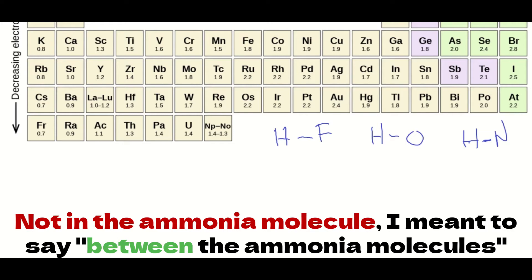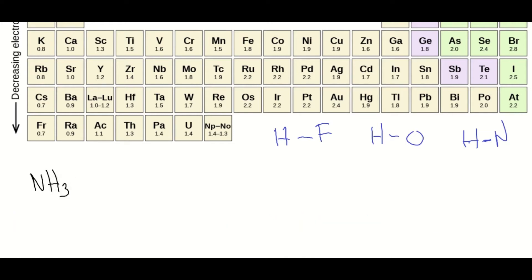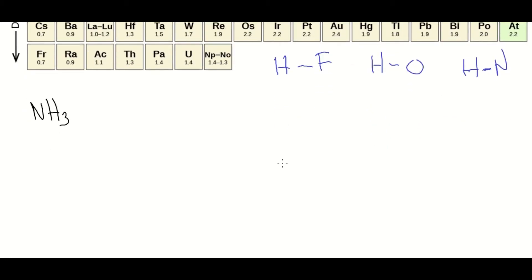All right, so let's do the ammonia-ammonia molecules first. Ammonia is NH3. So if we draw the Lewis structure, you get something like this.